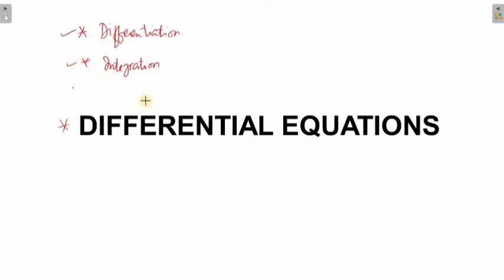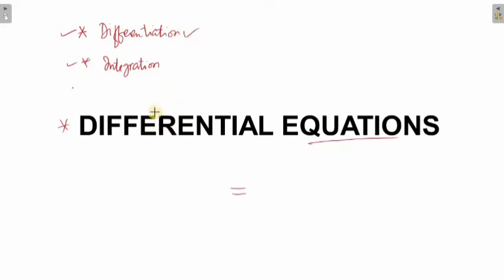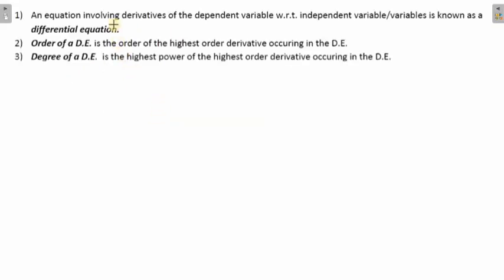What is a differential equation? So first and foremost, there is an equation — the word equation means there has to be an equal-to sign. Differential comes from the word differentiation. Basically, an equation involving derivatives of the dependent variable with respect to independent variable or variables is known as a differential equation.